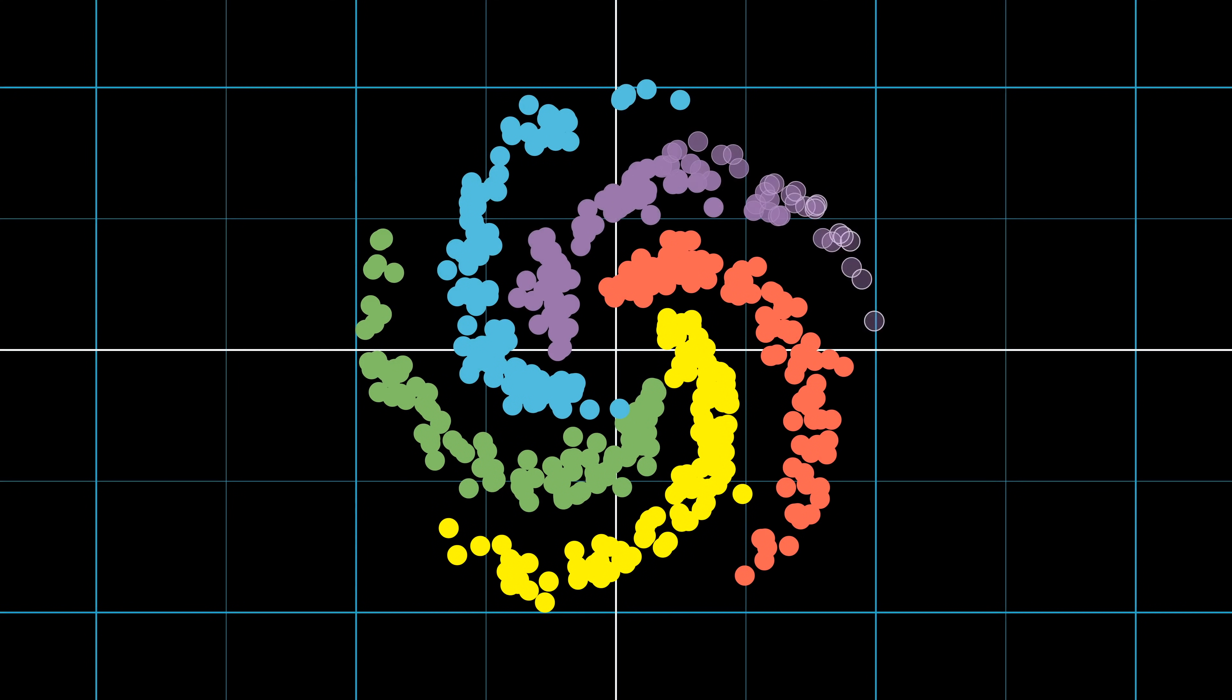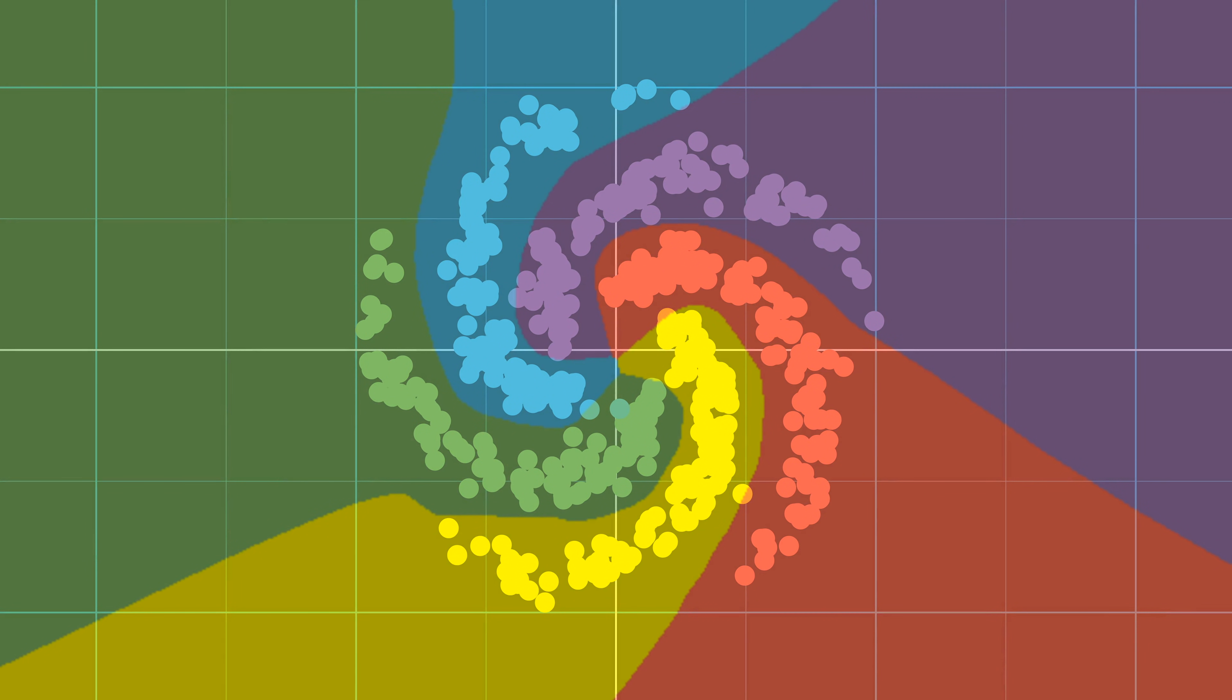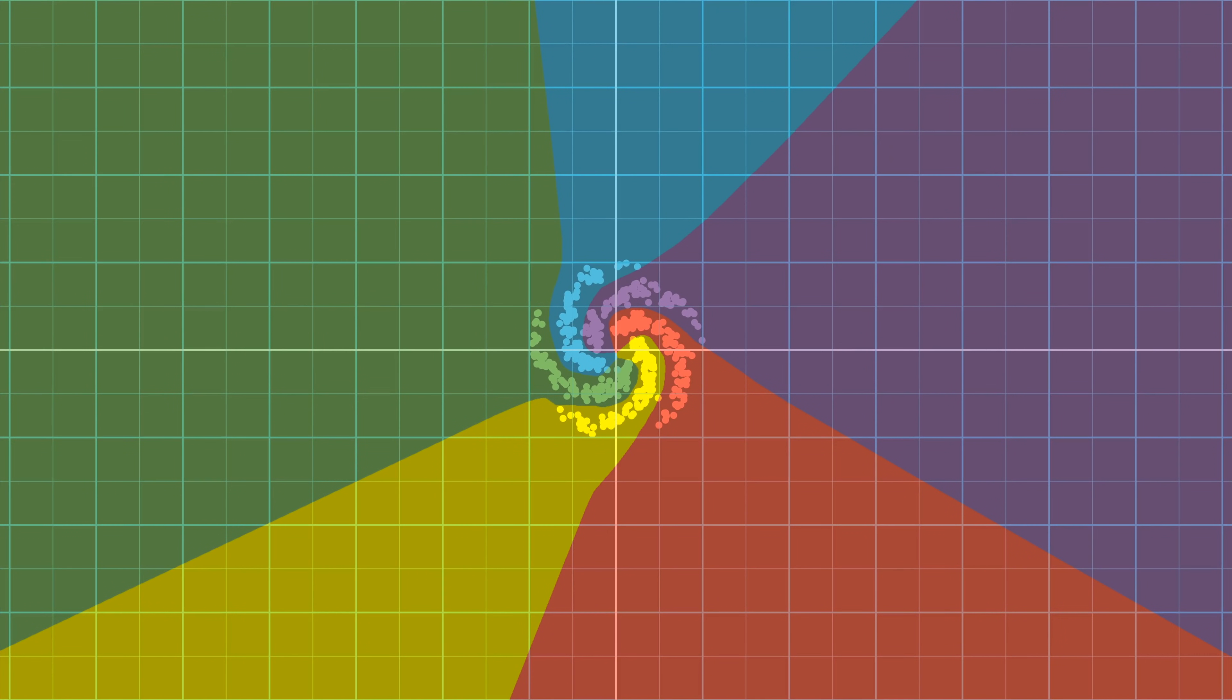Let's go back to the input space now. Here, you can see the decision boundaries separate the plane into distinct spirals that model the original dataset. However, it gets a little bit more complicated once we move outside the initial training region.